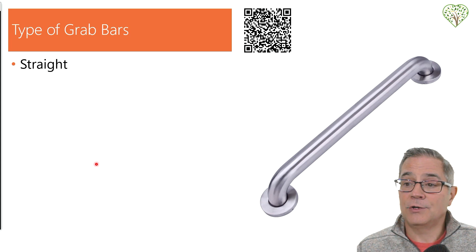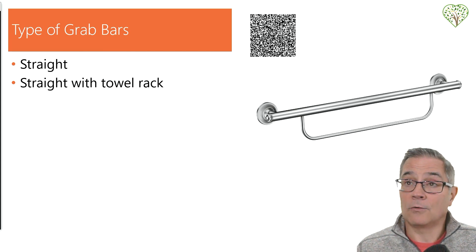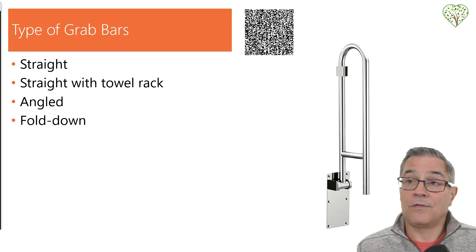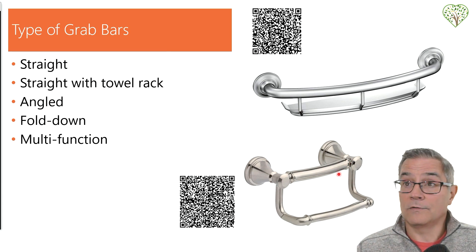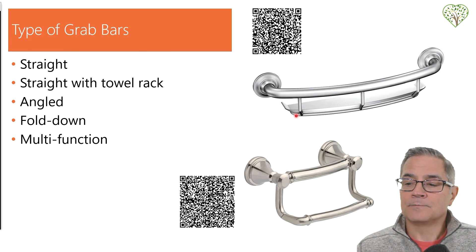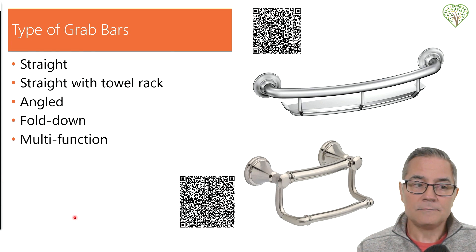Types of grab bars: first is a straight Amazon basic grab bar. There's also a straight grab bar with a towel rack, and an angled grab bar. There are fold-down grab bars typically placed next to toilets to help people get up and down — you see these more in commercial, hotel, and hospital environments. Then there are multifunctional grab bars: one is a toilet paper holder that has a lever that comes up and down and supports well over 250 pounds. Another is a Moen soap dish grab bar with a shelf for shampoos and other items, still functional as a grab bar in your shower.